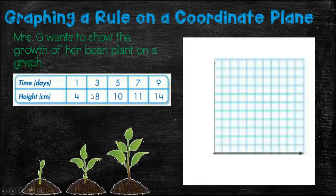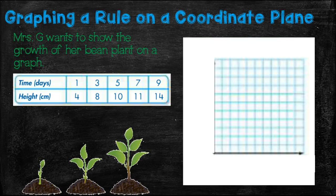So today we're going to learn about graphing a rule on a coordinate plane. And we've been talking about rules and how if you have missing parts of a table, how you can figure out what answers go in there. So now we're going to learn how to actually graph those rules on this coordinate plane.